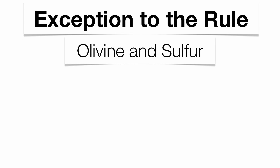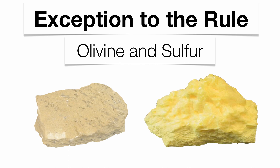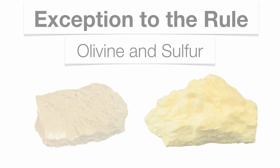The exception to that rule is olivine, which is always olive green, and sulfur, which is always going to be a nice yellow color. Those are two minerals where you could use color to help identify them.